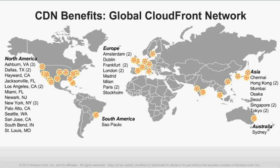Today, Amazon CloudFront has 43 edge locations, and we continue to add new locations to this map wherever we see higher latencies, so that we can lower the latency for your viewers wherever they happen to be.